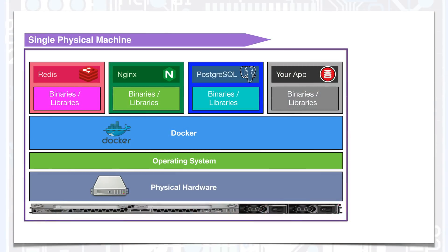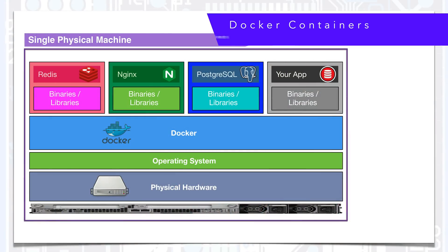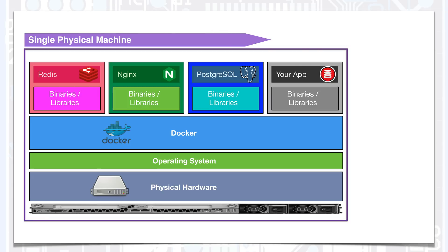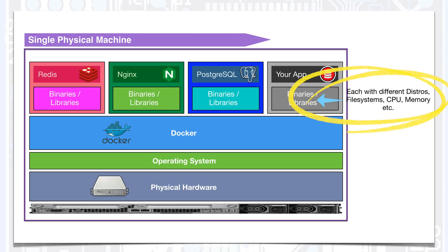That might sound like a virtual machine, and it's a good start for how to think about Docker containers. Docker containers are similar to virtual machines in that our application runs on what seems to be its own hardware instance. Every Docker container has its own virtualized file system, memory, storage, CPU cycles, and so on.